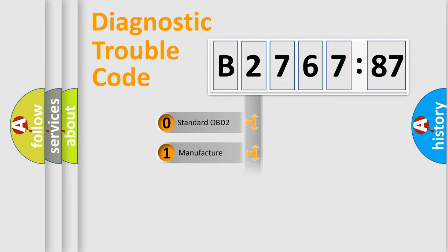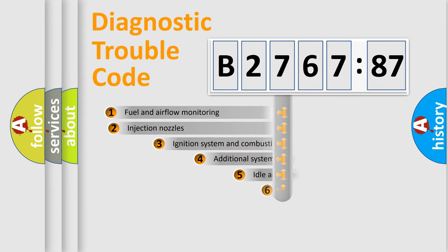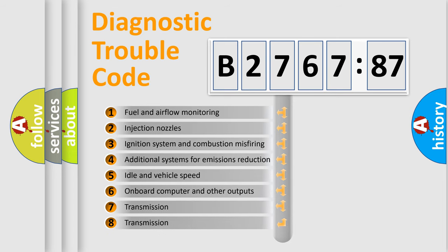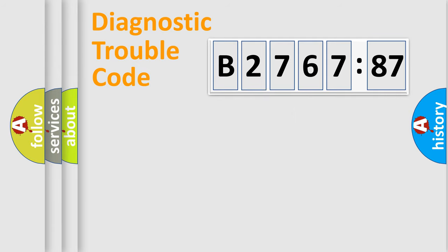If the second character is expressed as zero, it is a standardized error. In the case of numbers 1, 2, 3, it is a car-specific error. The third character specifies a subset of errors. The distribution shown is valid only for the standardized DTC code.